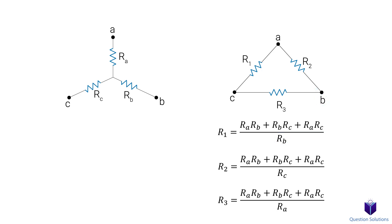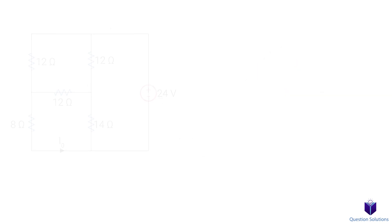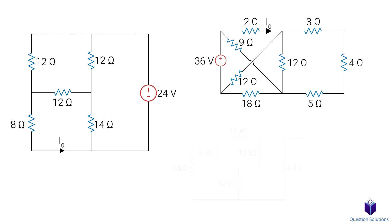Let's look at R2. Opposite to it is point C, so the bottom will be RC. Lastly, opposite to R3 is A, so the bottom will be RA. If by some chance you get resistors in a delta or a Y with the exact same resistor values, then you don't need to do much. The value of each resistor in the Y would be one-third the resistor value, and the value of the delta would be three times the value of each resistor. That's all there is to it, so let's do a few examples to see how this works with numerical values.